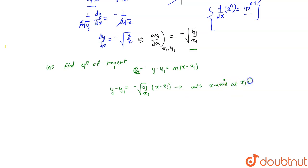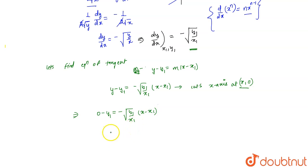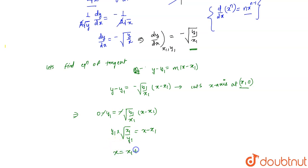We know this tangent cuts the x-axis at (x, 0). Putting y = 0 into the equation: 0 − y₁ = −√(y₁/x₁) · (x − x₁). The negatives cancel, and by cross multiplication: √(x₁/y₁) · y₁ = x − x₁. So x = x₁ + √(x₁·y₁).